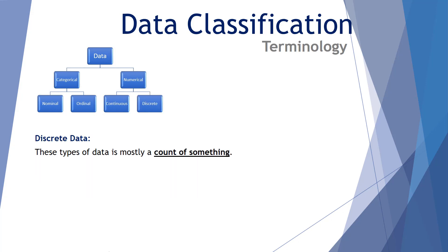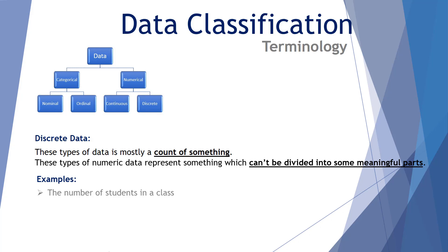Finally, numerical data can also be represented as a subclassification of discrete data. These types of data is mostly a count of something. These types of numerical data represent something that cannot be divided into meaningful parts. So let's look at some examples. The number of students in a class. It's fixed. It's discrete. You can only have a whole number. Half a student has no real meaning. Likewise, the number of matches in a matchbox, you might have 100, 102, but you don't have 100.3786 matches. In both examples, the data can be counted as a whole number. That's a simplified example of how to classify something as numerical discrete data.